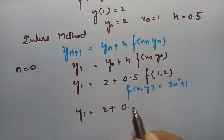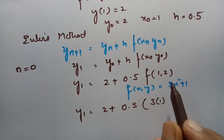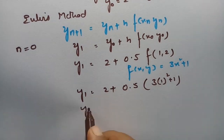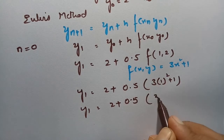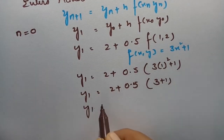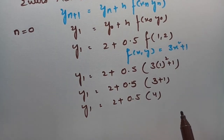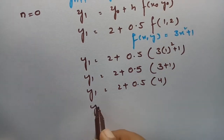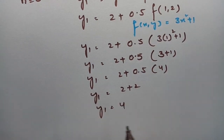This is going to be 2 plus 0.5 times 3 into 1 squared plus 1. So y₁ = 2 + 0.5 into (3 + 1), that is 4. y₁ = 2 + 0.5 × 4, and half of 4 is 2. Therefore y₁ = 2 + 2 = 4.